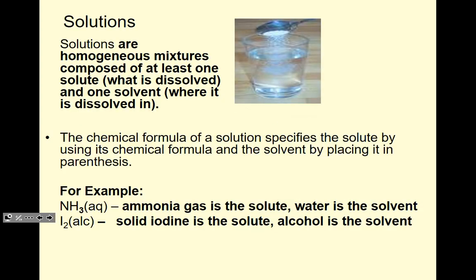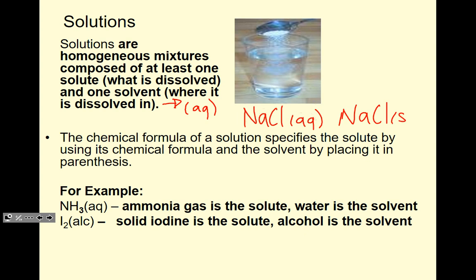Solutions are homogeneous mixtures composed of at least one solute dissolved in one solvent. You can usually tell it's dissolved in water when you see 'aq' — aq means this particular compound is dissolved in water. For example, NaCl(aq) and NaCl(s) are both salt: one is table salt and the other is table salt dissolved in water. The chemical formula of a solution specifies the solute by its chemical formula and the solvent in parentheses. For example, ammonia gas as the solute in water, or solid iodine dissolved in alcohol.